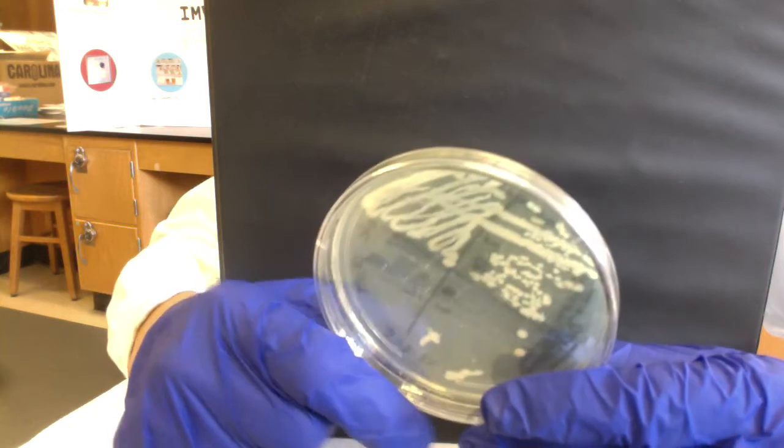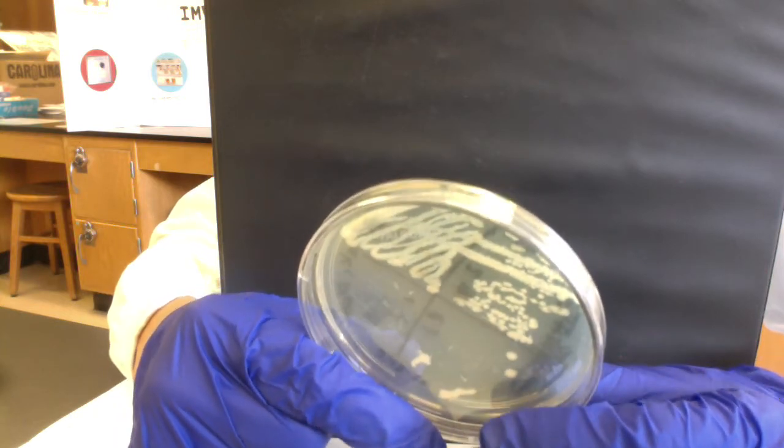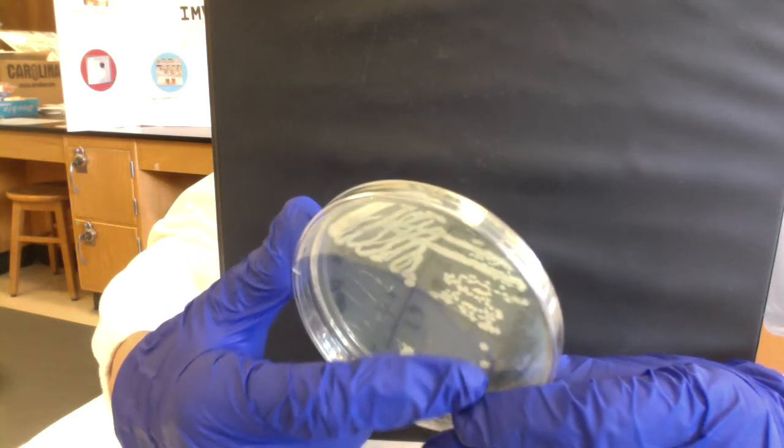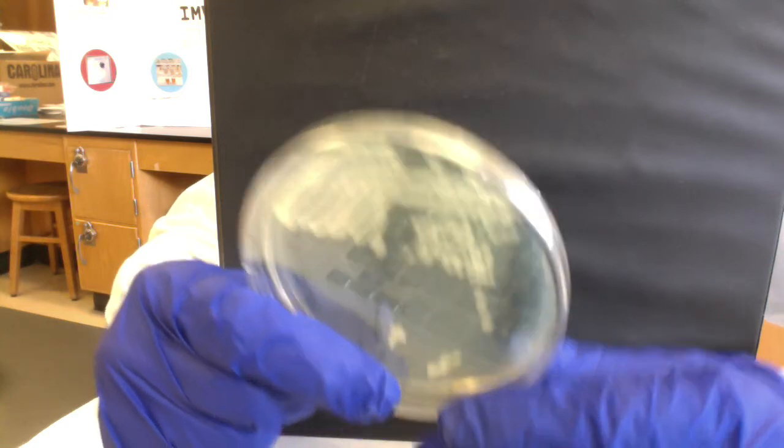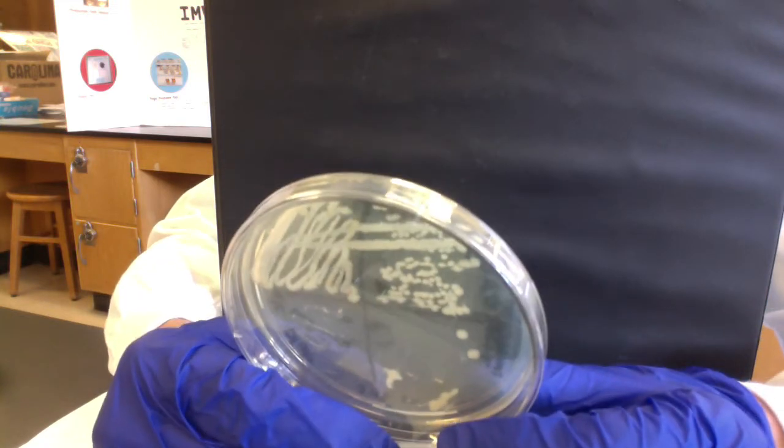We sterilized our loop, cooled it, and then pulled some cells from quadrant two to quadrant three. We have two isolated colonies in quadrant three.